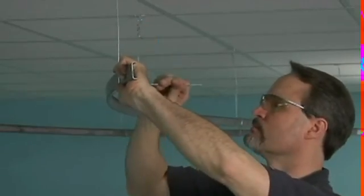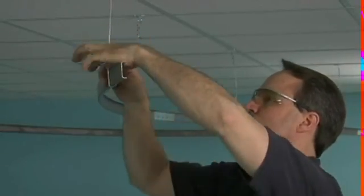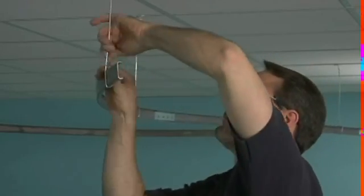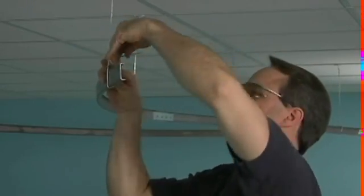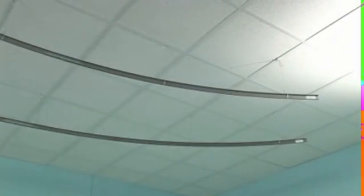Inspect and examine the finished suspension system. Extra care at this point will increase the speed and accuracy of the installation. Check to see that all hanger wires are taut, straight and plumb within 1 in 6 ratio or about 10 degrees. If any wires need to be moved or adjusted, fix them now.